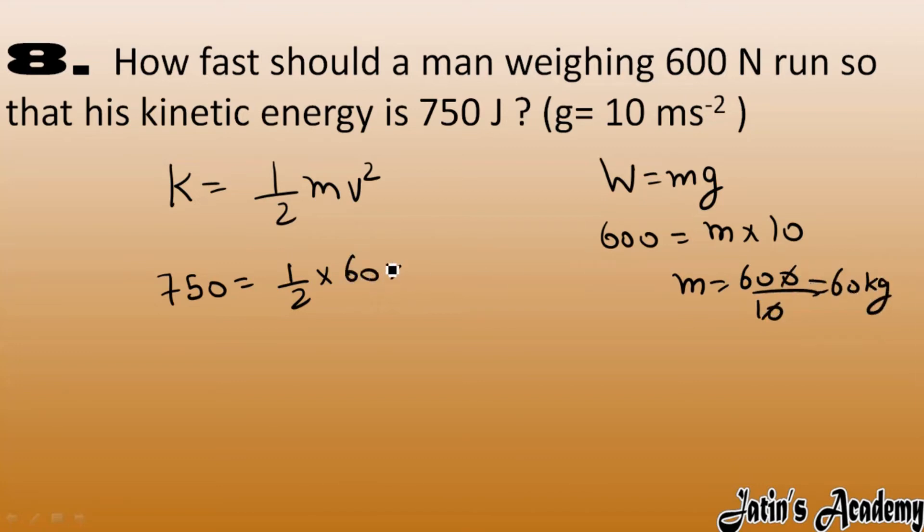Velocity we have to calculate. Now cross multiply: 750 into 2 by 60, okay, so this is v squared.